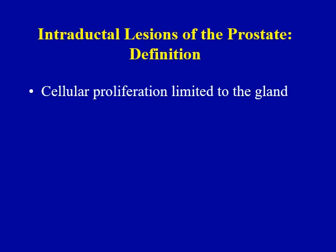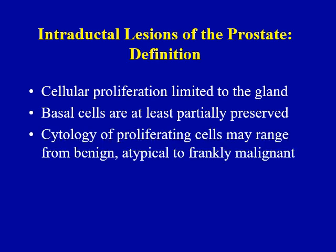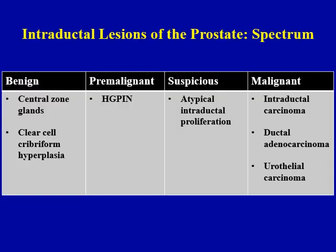First, it is very important to understand the definition of intraductal lesions. They are defined by three morphological characteristics: cellular proliferation is limited to the gland, basal cells are at least partially preserved, and the cytology of proliferating cells ranges from benign, atypical, to frankly malignant. The differential diagnosis of intraductal lesions is pretty broad, which includes benign, pre-malignant, suspicious to frankly malignant lesions, as shown here in this particular table.